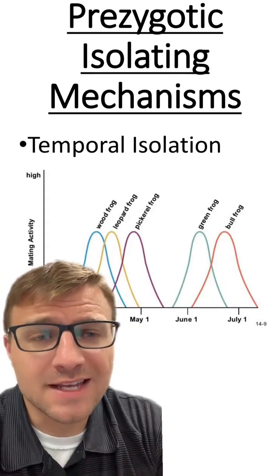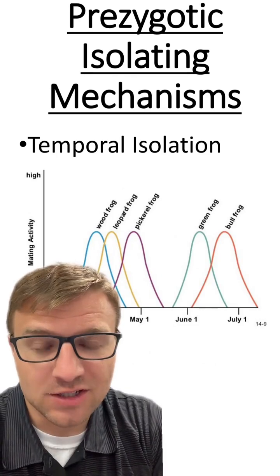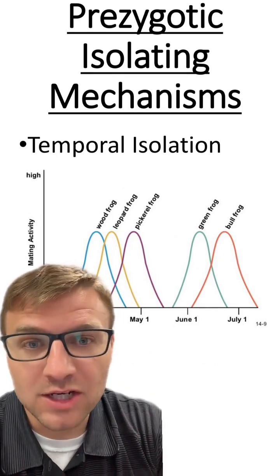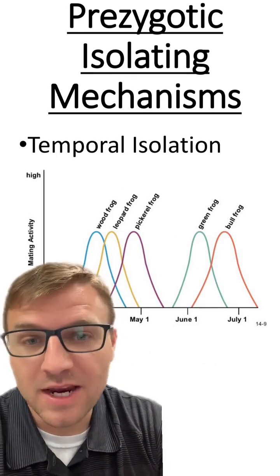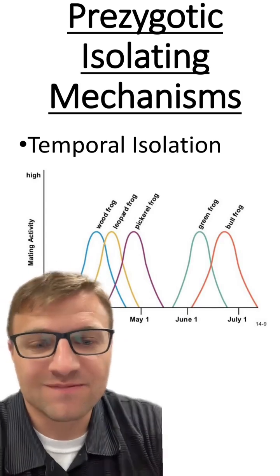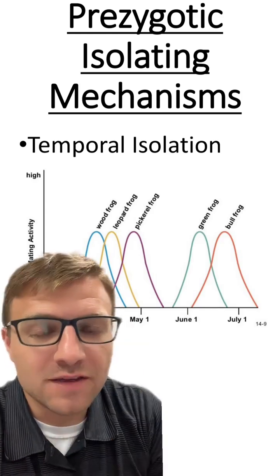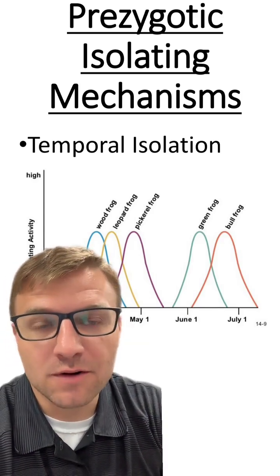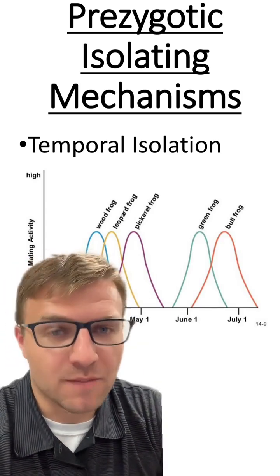Next is temporal isolation. This is when the different populations have different mating seasons. For example, all of these frogs have different mating seasons, so it's going to prevent reproduction from happening.